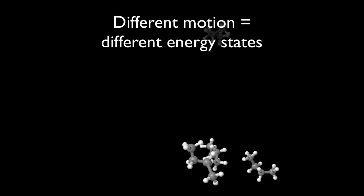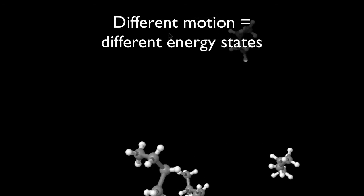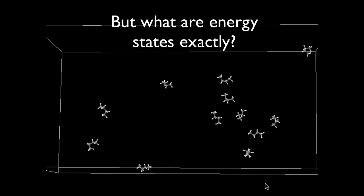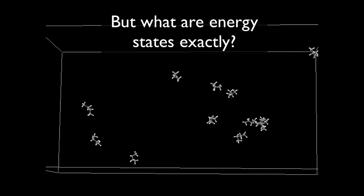That's the different energy states. They correspond to different kinds of motion, and the probability of having a particular motion depends on the energy through this formula, which is the Boltzmann distribution. But here I want to focus on what these energy states are exactly.